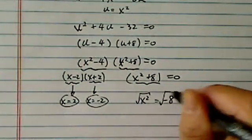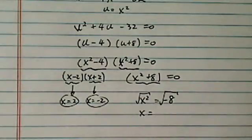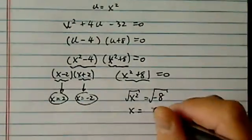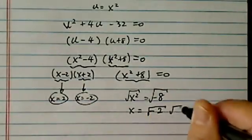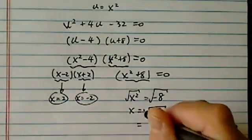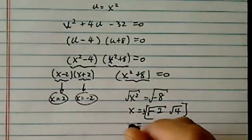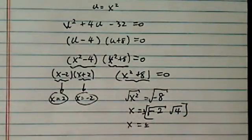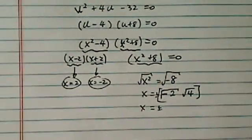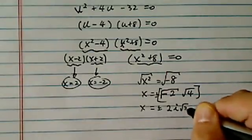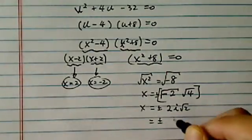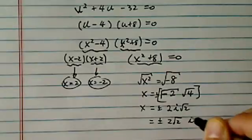We're going to take the square root. We recognize right away that √(-8) is √(-1 × 8), which equals ±2√2 i.